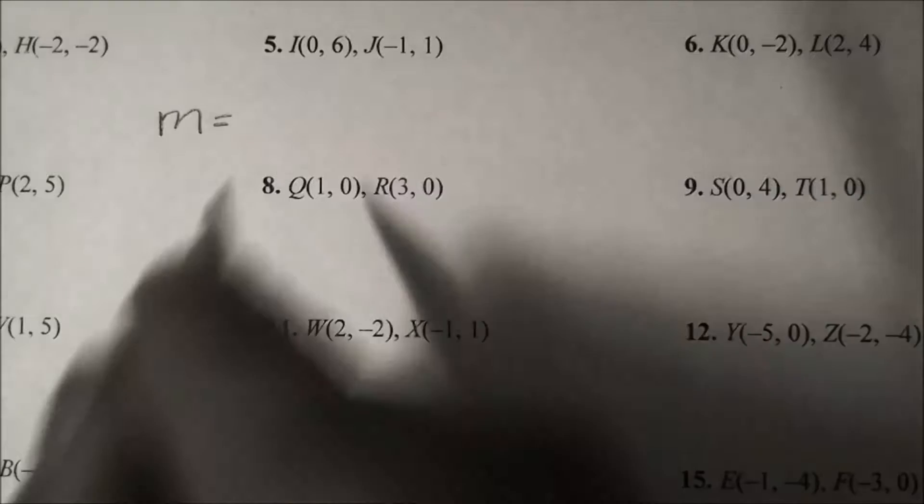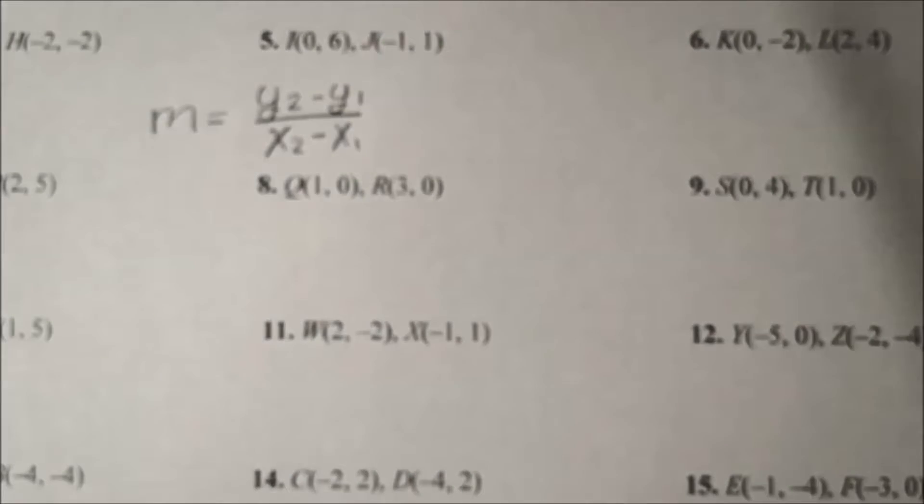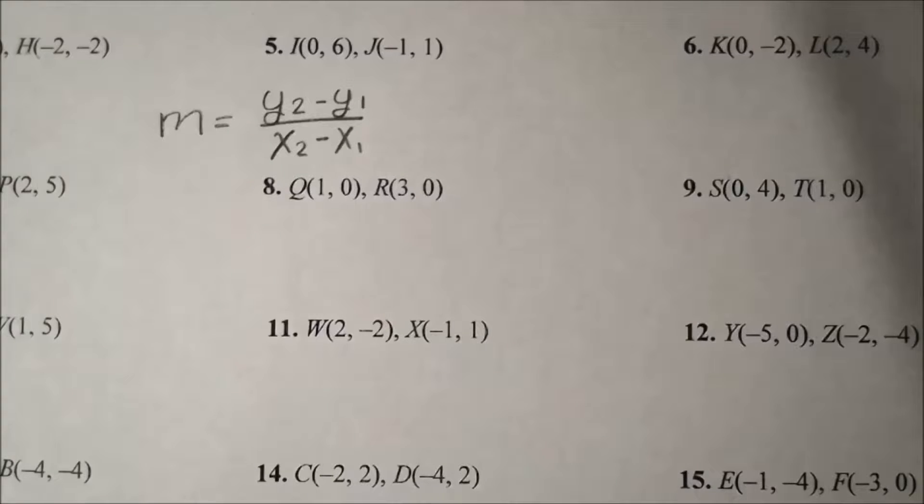The first thing that we need to do is write m equals, and we're going to write our formula down. That's y sub 2 minus y sub 1 over x sub 2 minus x sub 1. Now that we have that, we can move forward.